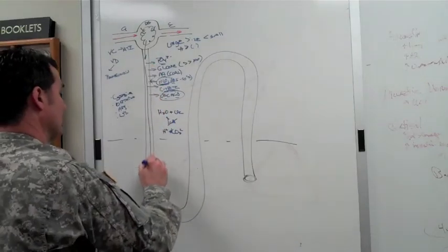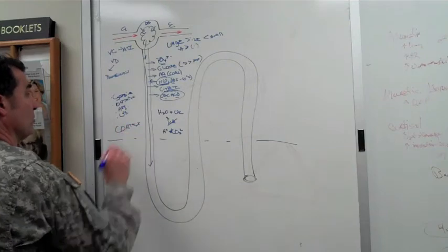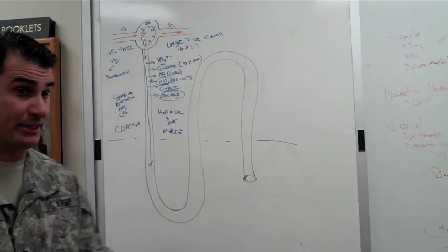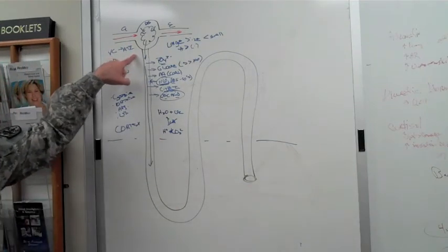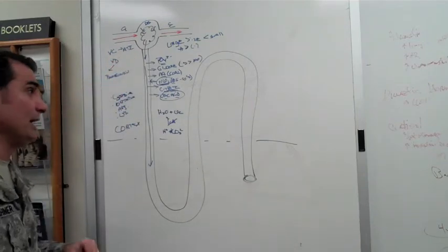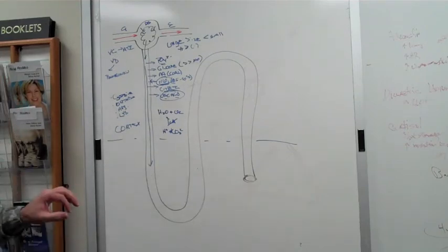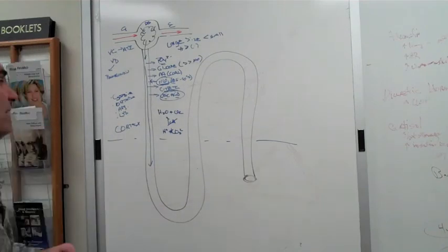As you come down the tubule, you go from the cortex, which contains most of your proximal tubule as well as your glomeruli. Some of your distal tubule is there, but a majority of the work that happens in the distal tubule happens in the medulla.